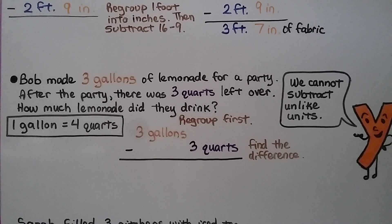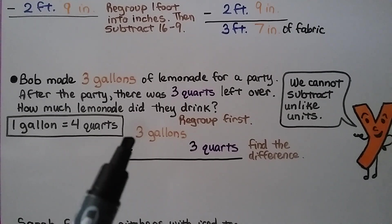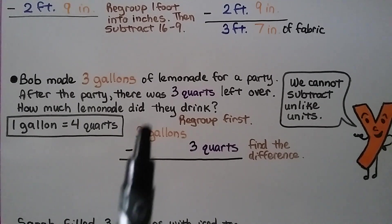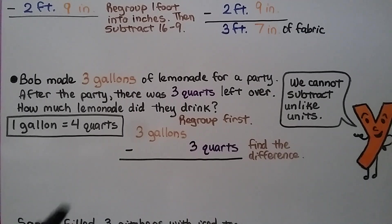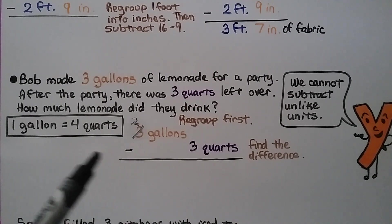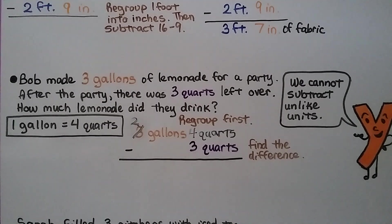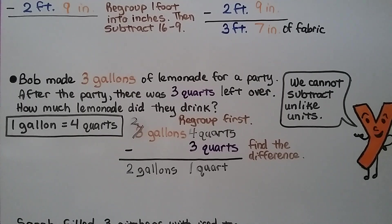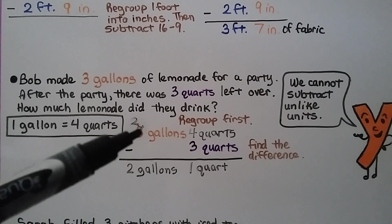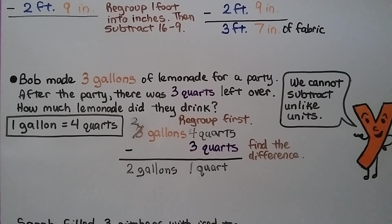Bob made three gallons of lemonade for a party. After the party, there were three quarts left over. How much lemonade did they drink? We need to subtract three quarts from three gallons. We cannot subtract unlike units — gallons go in one column and quarts in another. We take one gallon from the three gallons, making it two gallons, and write that one gallon as four quarts. Four quarts minus three quarts is one quart, and we drop down the two gallons. They drank two gallons one quart at the party.